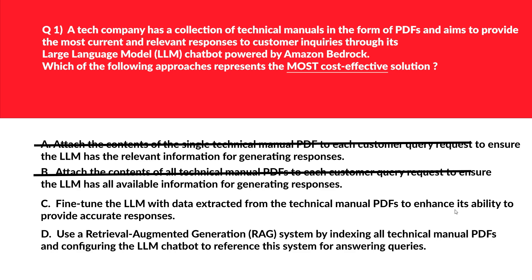Option C says: fine-tune the LLM with data extracted from the technical manual PDFs to enhance its ability to provide accurate responses. Fine-tuning is costly and time-consuming — let's eliminate this. We are left with option D: use a RAG system by indexing all technical manual PDFs and configuring the LLM chatbot to reference the system for answering queries. This approach is cost-effective as it allows the LLM to access relevant information on demand without excessive data processing or fine-tuning — that is the correct answer.